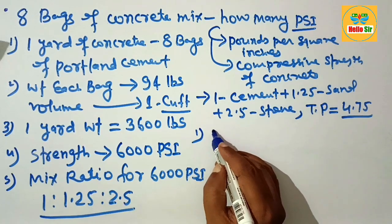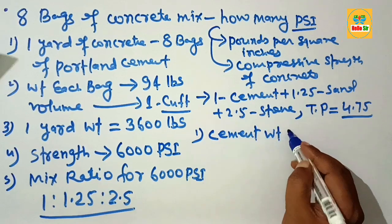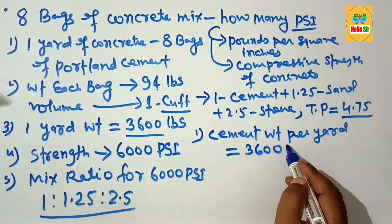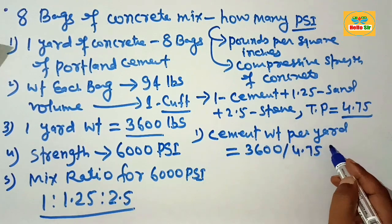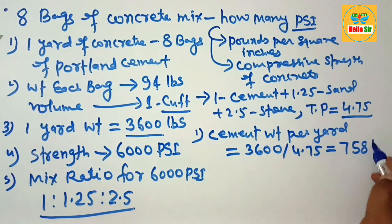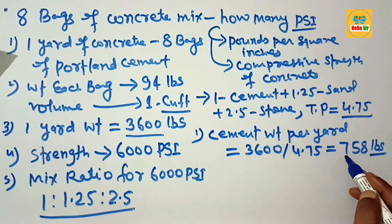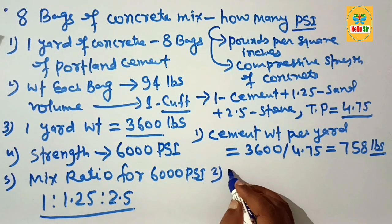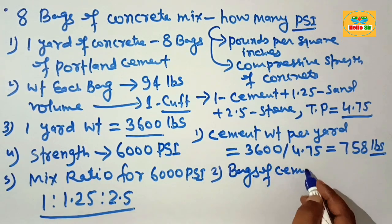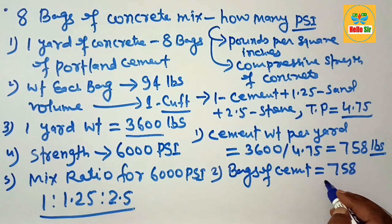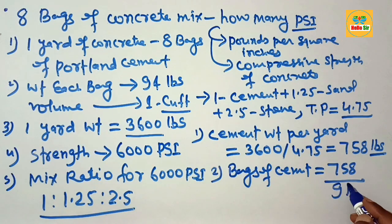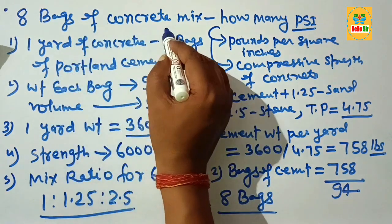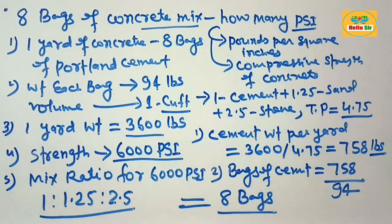To calculate the cement weight required per yard: 1 yard of concrete weighs 3600 pounds, divided by the total proportion of 4.75, which comes to about 758 pounds. That means you need 758 pounds of cement to prepare 1 cubic yard of concrete. Dividing 758 by the weight of 1 bag (94 pounds) gives about 8 bags of cement. So 8 bags of concrete mix yields a compressive strength of about 6000 PSI.